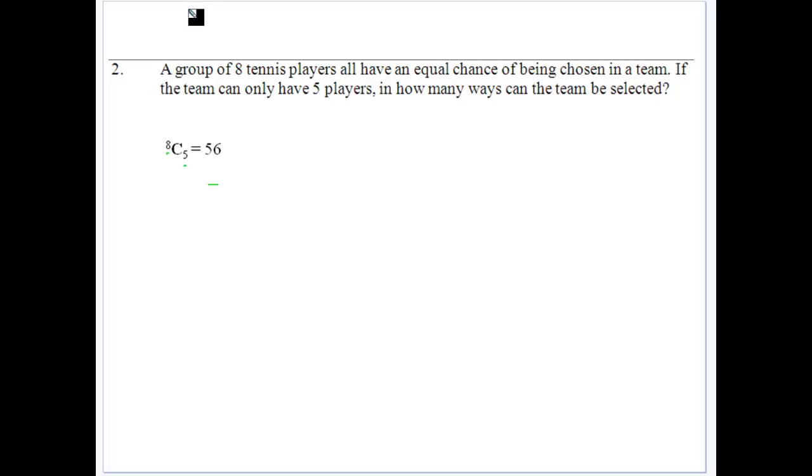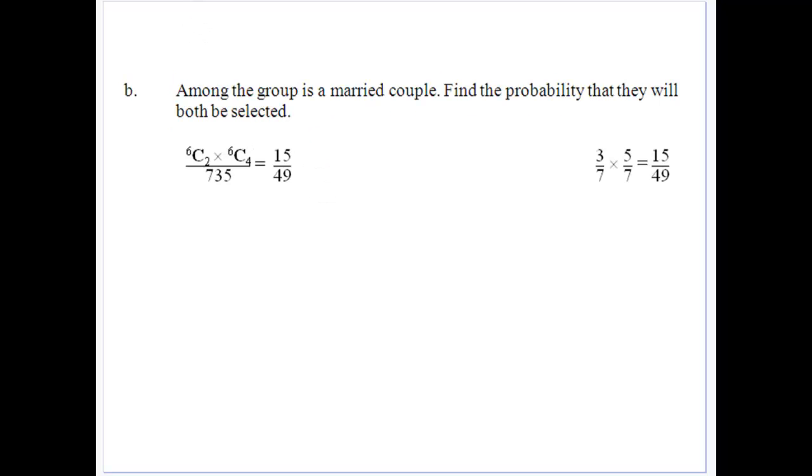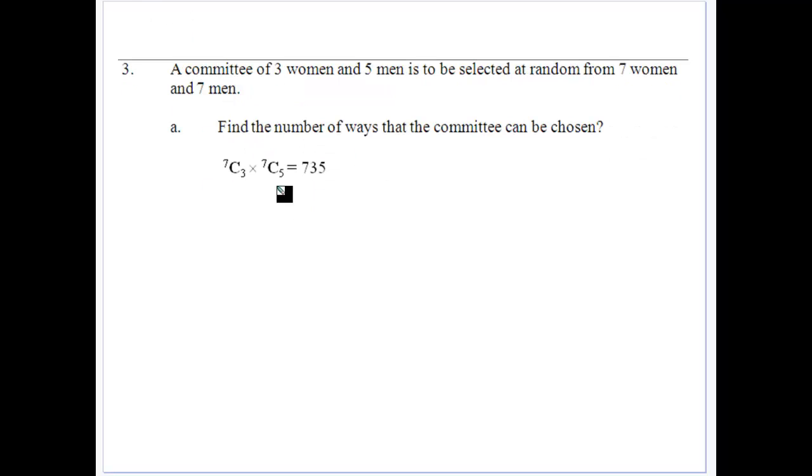So we're trying to infer from the question whether there's an order. If there's an order taking place, then it's a permutation. There's no order, it's a combination. We've got a committee of three women and five men selected from seven women and seven men. How many ways can we get a committee? We're going to get three women out of seven and five men out of seven. The number of different committees that can be chosen is 7C3 times 7C5, which gives us 735. So that's the total number of groups that could be chosen.